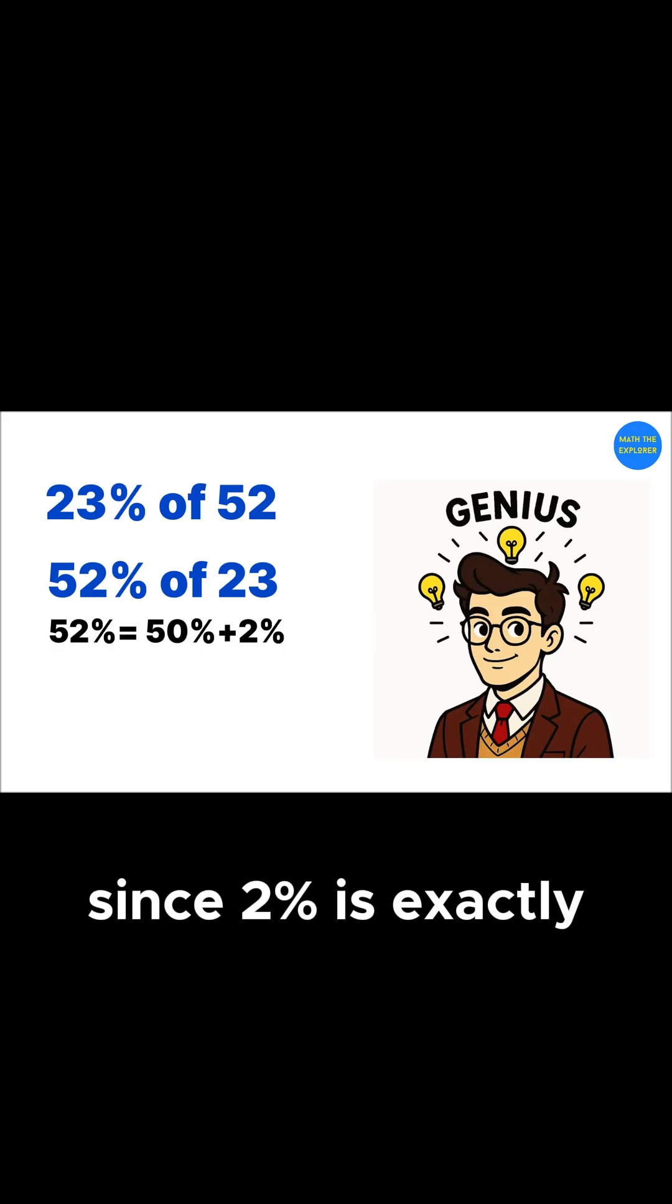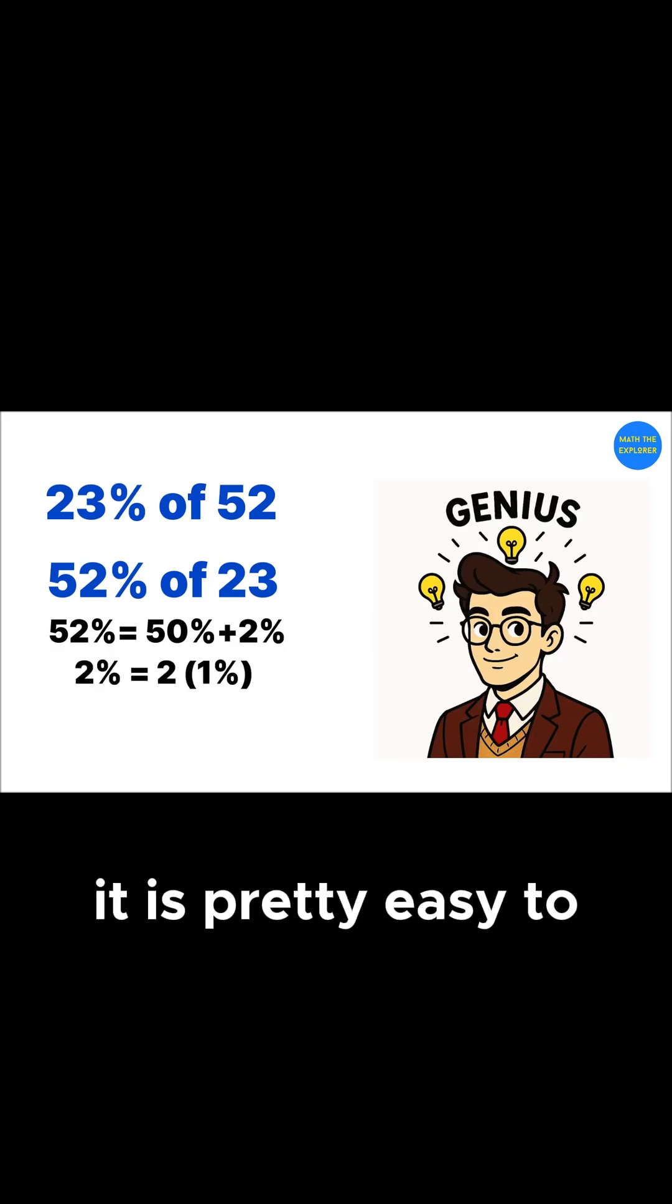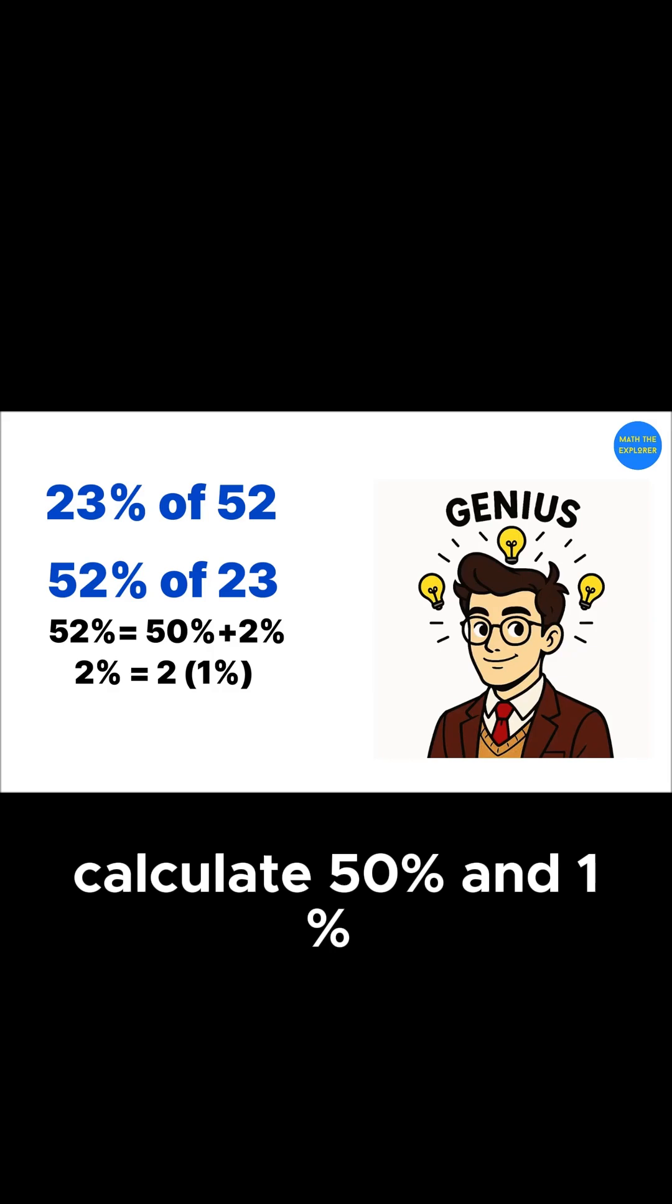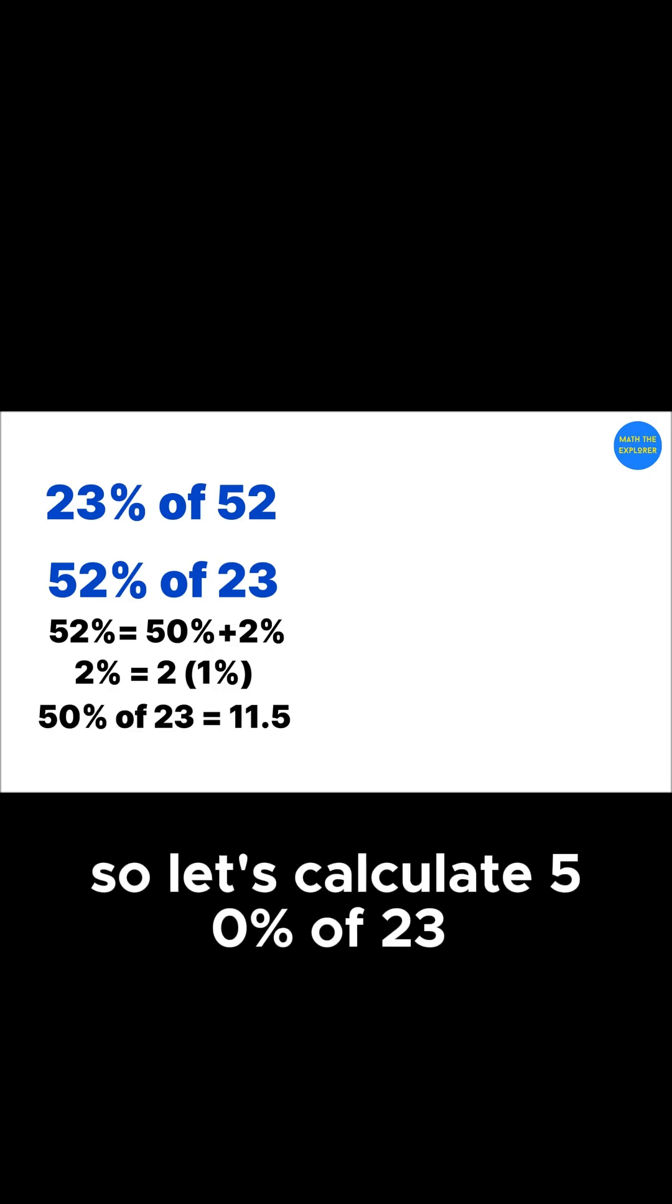Since 2% is exactly equal to double of 1%, now it is pretty easy to calculate 50% and 1%. So let's calculate 50% of 23.